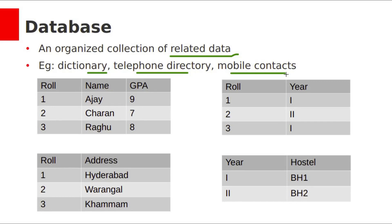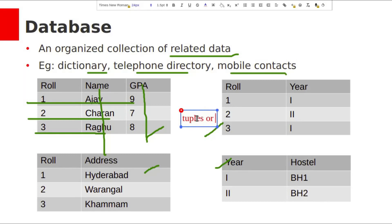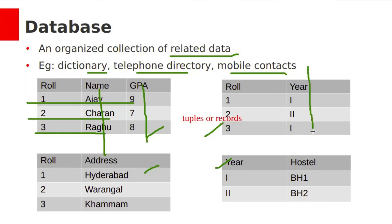The most commonly used database model is called the relational model. It uses relations to store data. Suppose you want to store a student's information — by using the relational database model, we will store information in the form of tables. In a relational database, data is organized in rows and columns. Rows are called tuples or records. Columns are called domain or attribute. All the data within a single column are of the same type.